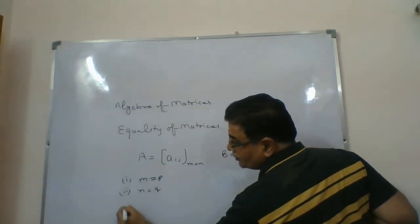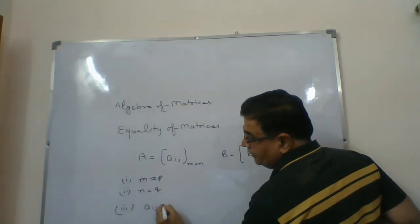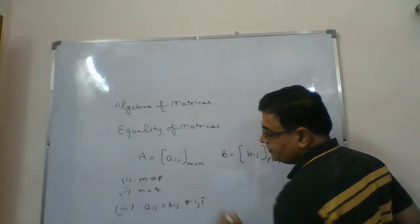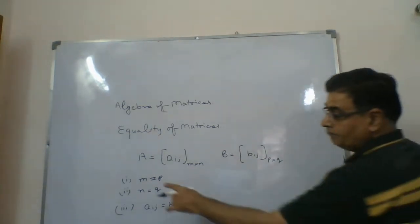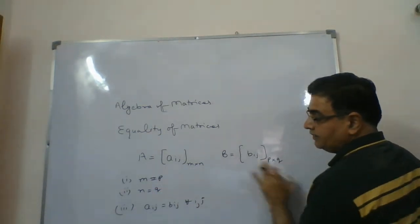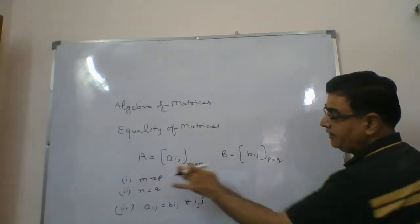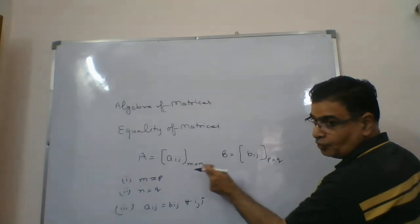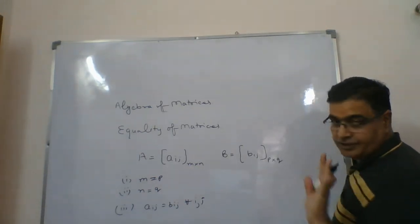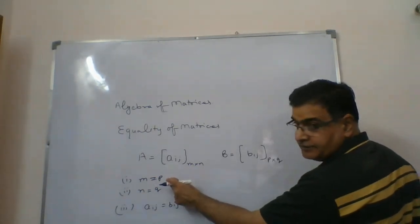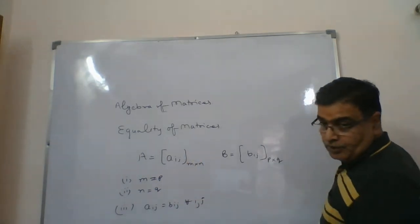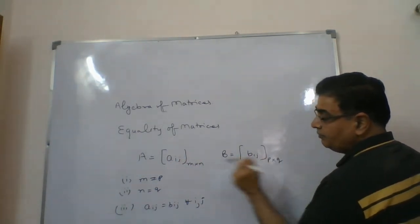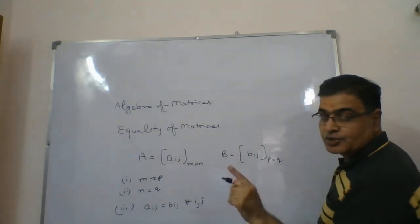The third condition says A_ij is equal to B_ij for all i and j. So the number of rows and columns in A and B must be the same — meaning A and B should be of the same order. Same order means the same number of rows and columns, so m equals p and n equals q. Then the second condition is A_ij equals B_ij, meaning corresponding elements must be equal.